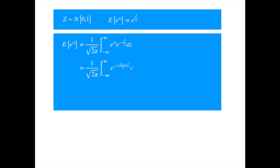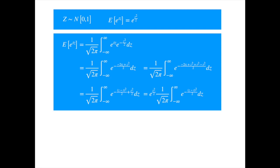Combining the two exponents, the term in the numerator looks like a squared minus 2 times a times b, as in the famous (a minus b) squared formula. So if we add the square of t, then we get the complete square. Writing it as a square and taking the constant term out of the integral, the term starting with 1 over square root of 2 pi is the total probability of a normal distribution with mean t and variance 1, and so should equal 1. We are done. We can now generalize this formula to get the moment generating function of a general normal variable.